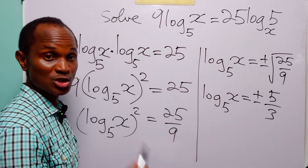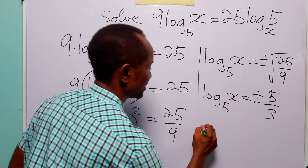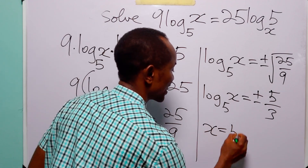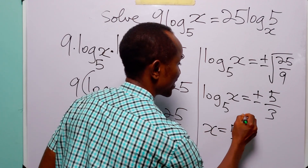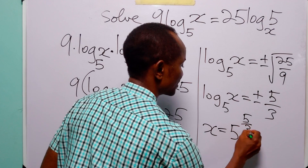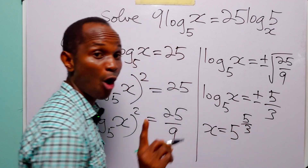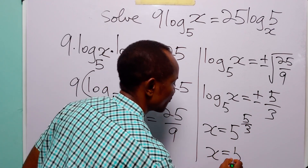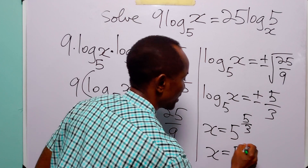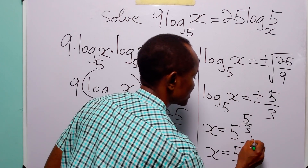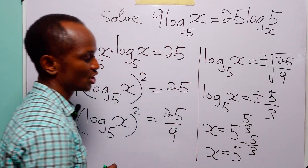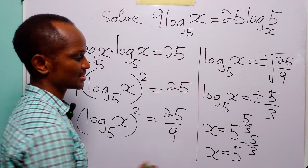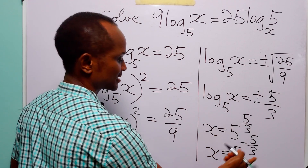So we have that x = 5^(5/3), or x = 5^(−5/3). We have two values for x.